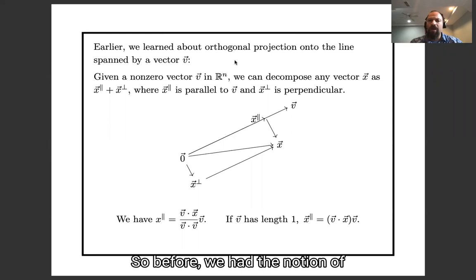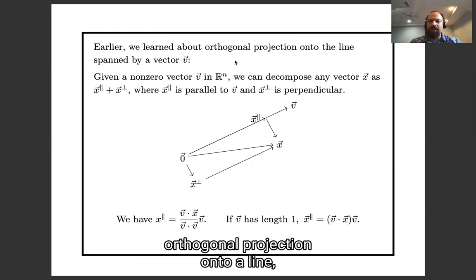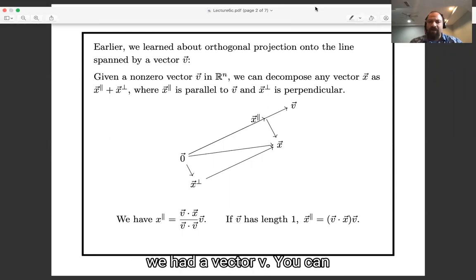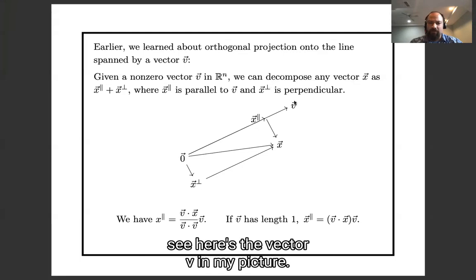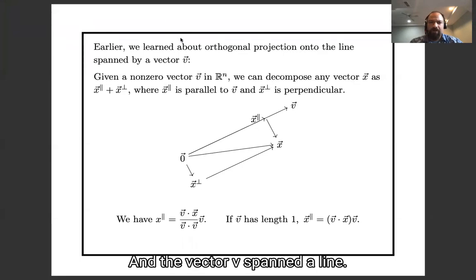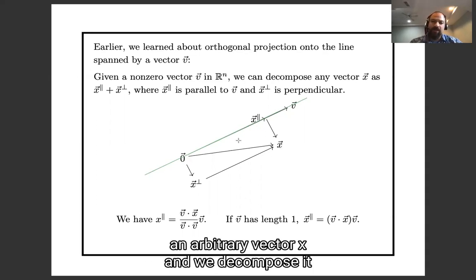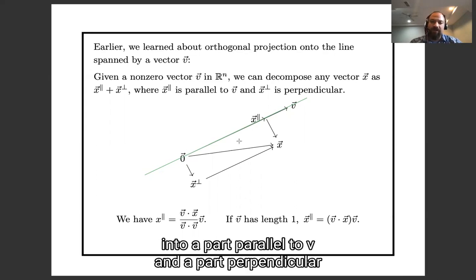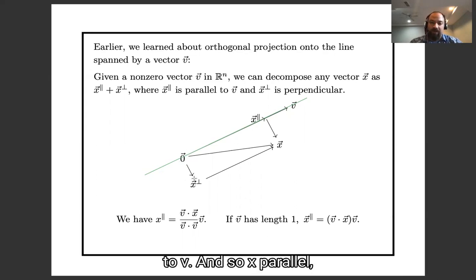So before we had the notion of orthogonal projection onto a line. We had a vector v, you can see here's the vector v in my picture, and the vector v spanned a line, here's that line. And we had an orthogonal projection onto that line where we took an arbitrary vector x and we decomposed it into a part parallel to v and a part perpendicular to v.